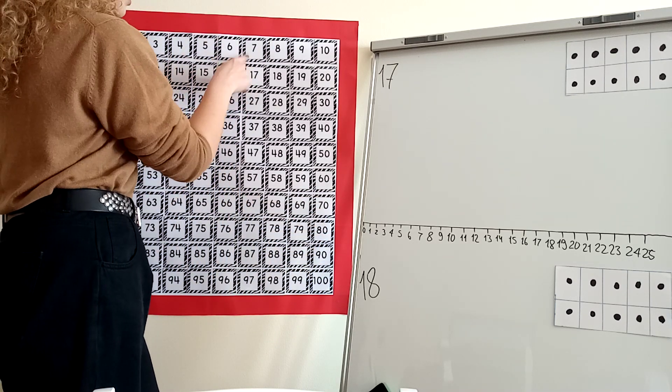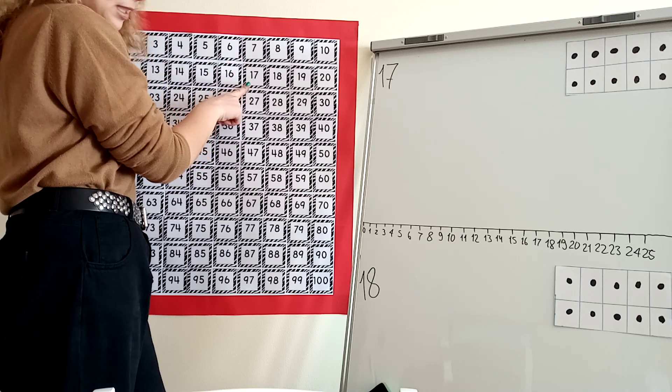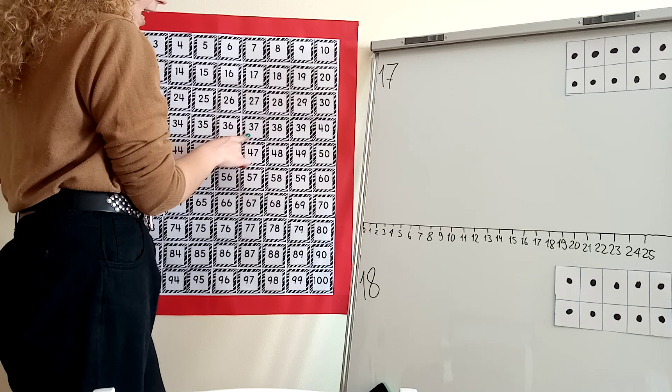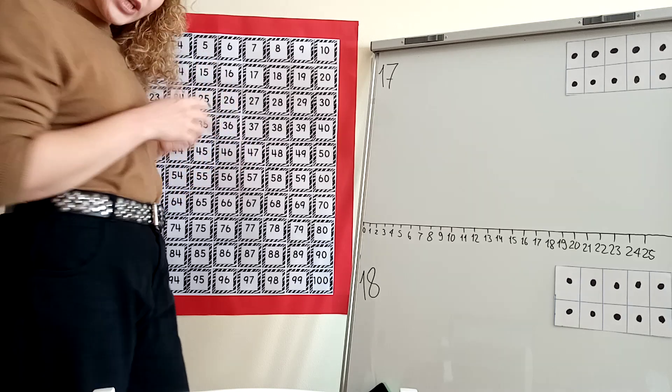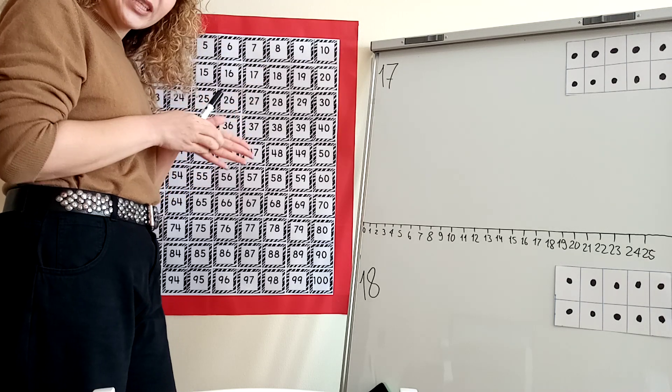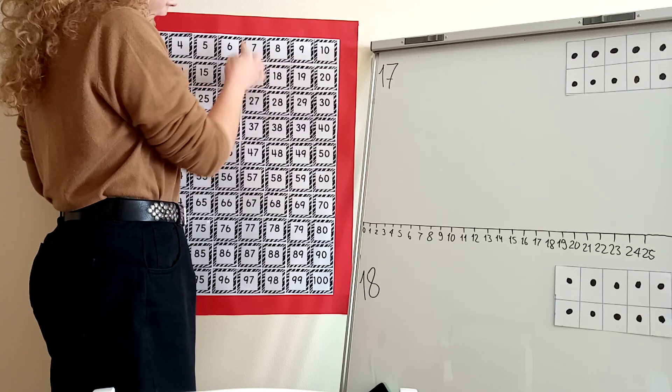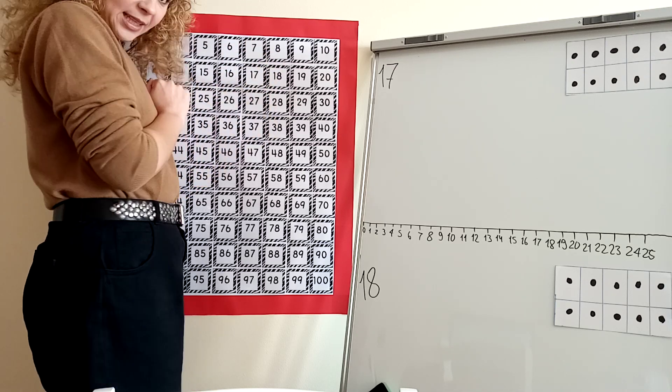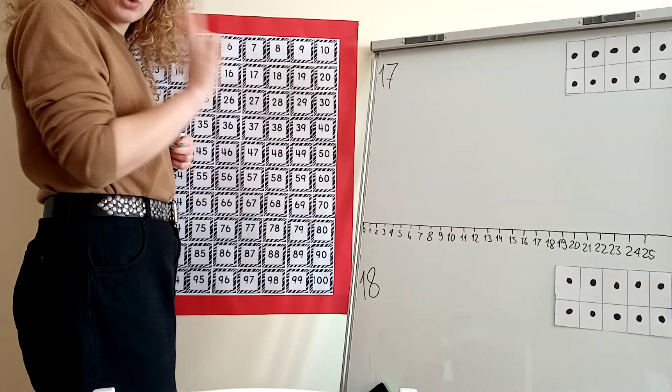For example, 7 plus 10 is 17, plus 10 is 27, plus 10, 37. You can see when you add 10 to a number, only the first digit here changes, but the last one stays the same. But this is only if you're talking about two-digit numbers.